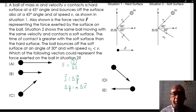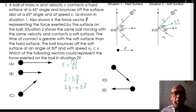Remember, the final velocity is smaller in magnitude and has a smaller angle with the x-axis. Therefore, the change in velocity has a direction in the first quadrant, as shown. That direction is also the direction of the change in momentum, the impulse, and the force exerted by the surface.